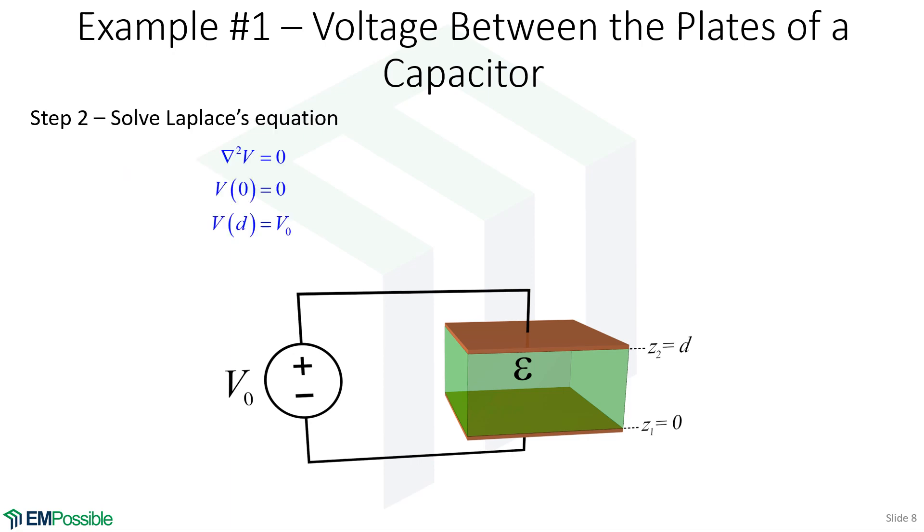Step two is to solve Laplace's equation. Well, let's state the problem. We have Laplace's equation, and we can use this for homogeneous media because there's no charge here. So we have Laplace's equation instead of Poisson's equation, and it is homogeneous. So we just have the del squared V equals zero. We'll get a general solution from that, but we need boundary conditions.